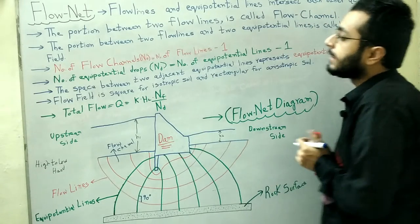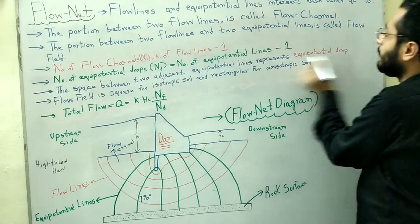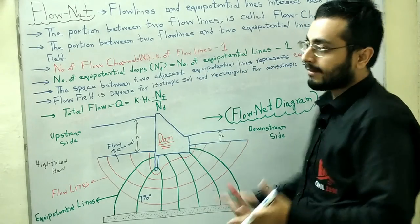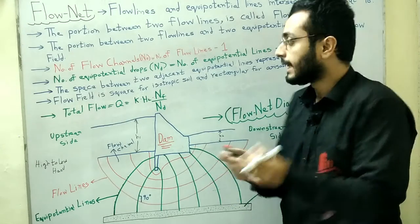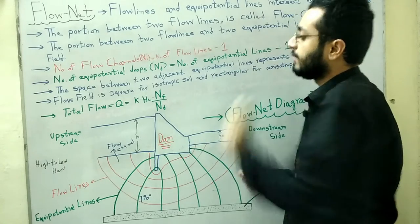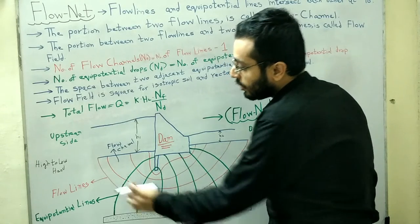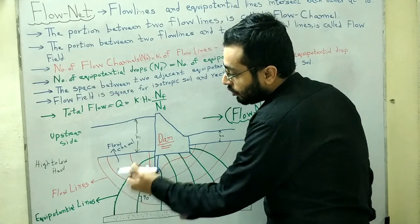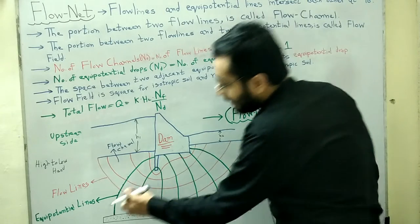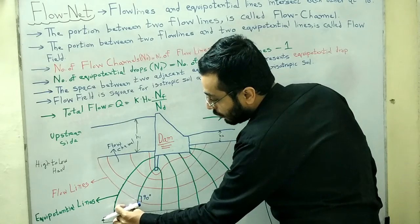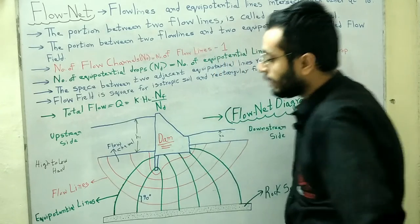Similarly, the space between two adjacent equipotential lines represents an equipotential drop. Just as we defined flow channels between flow lines, the portion between two adjacent green equipotential lines represents one equipotential drop — first, second, third, and so on.